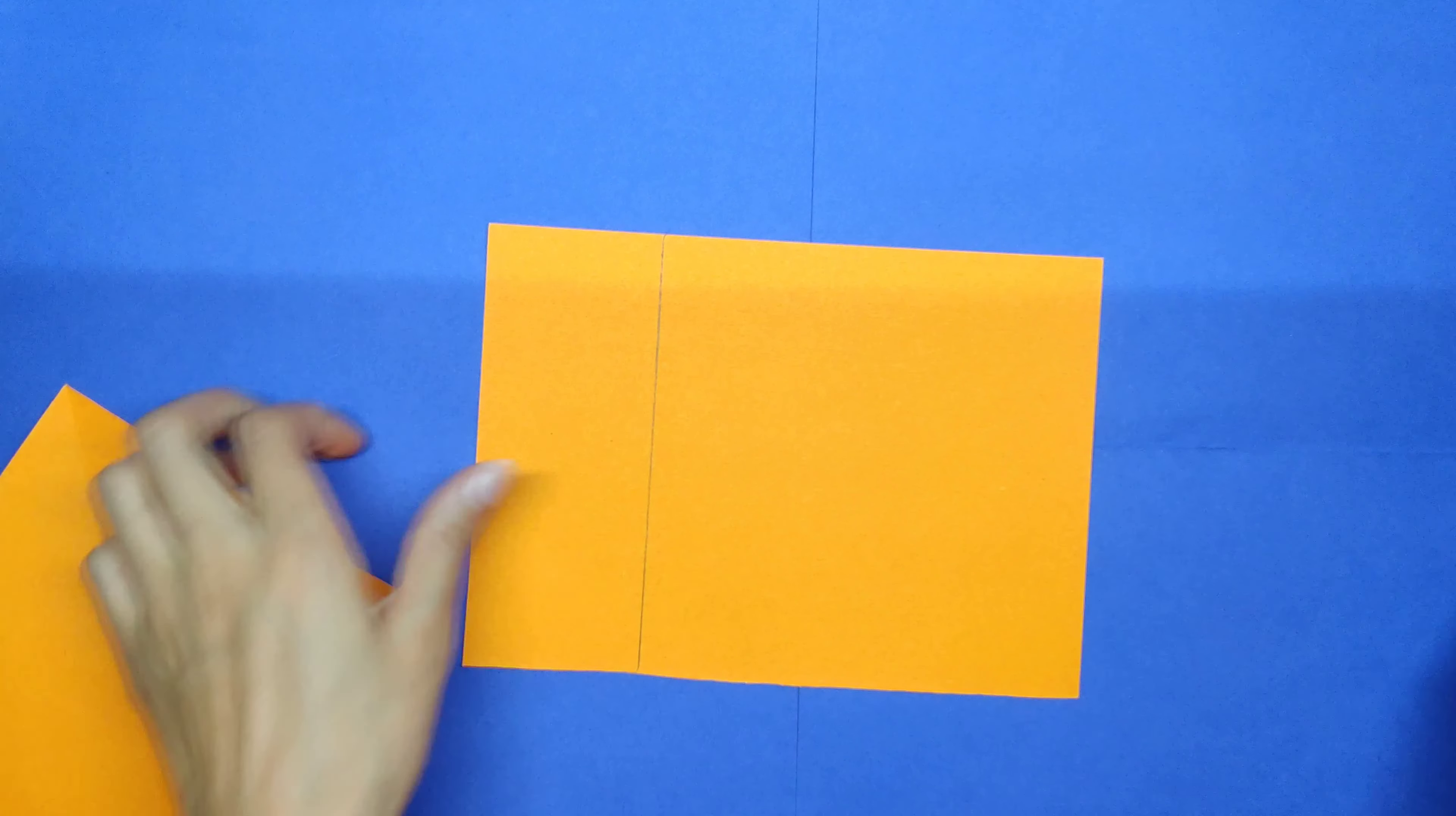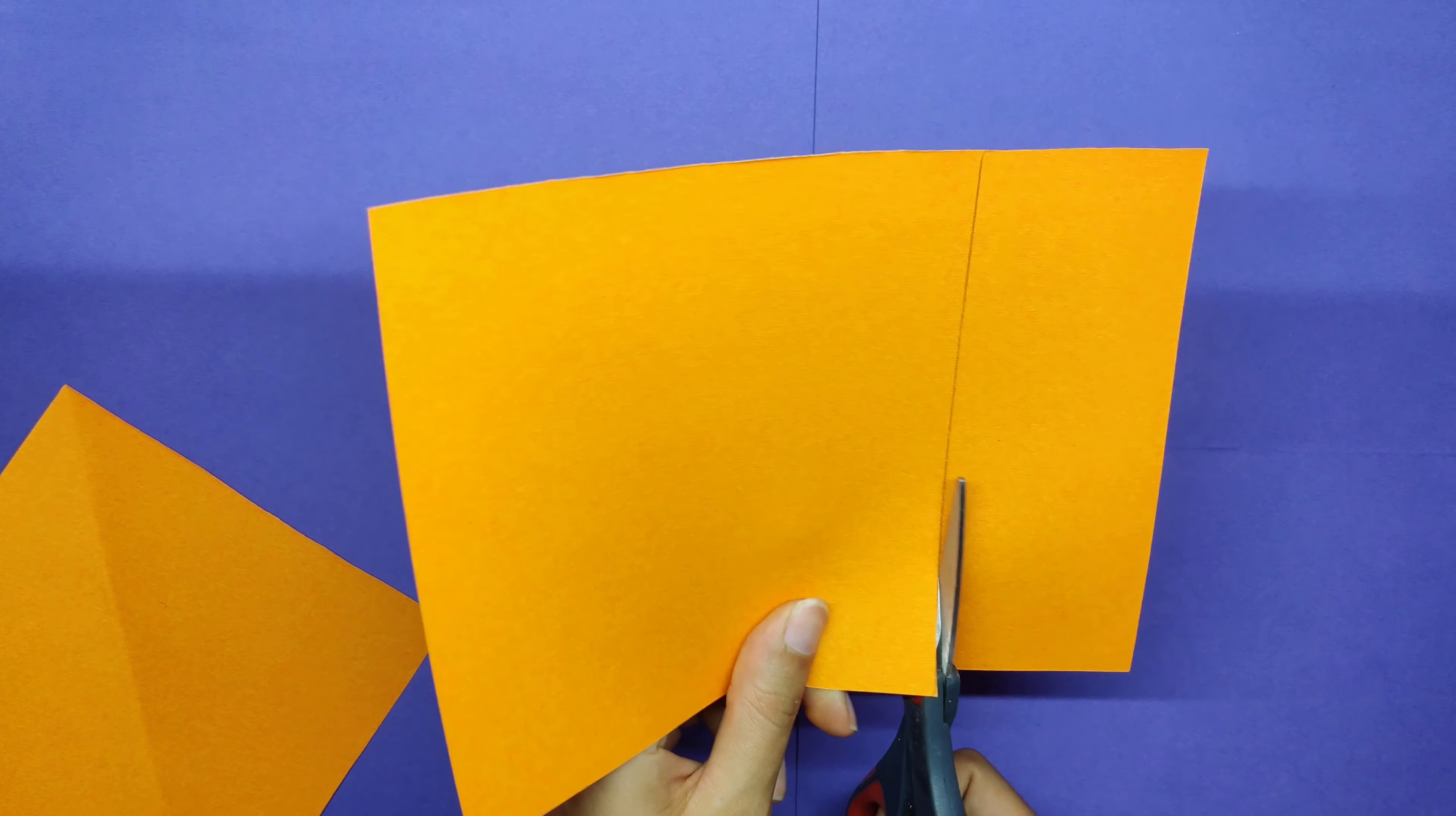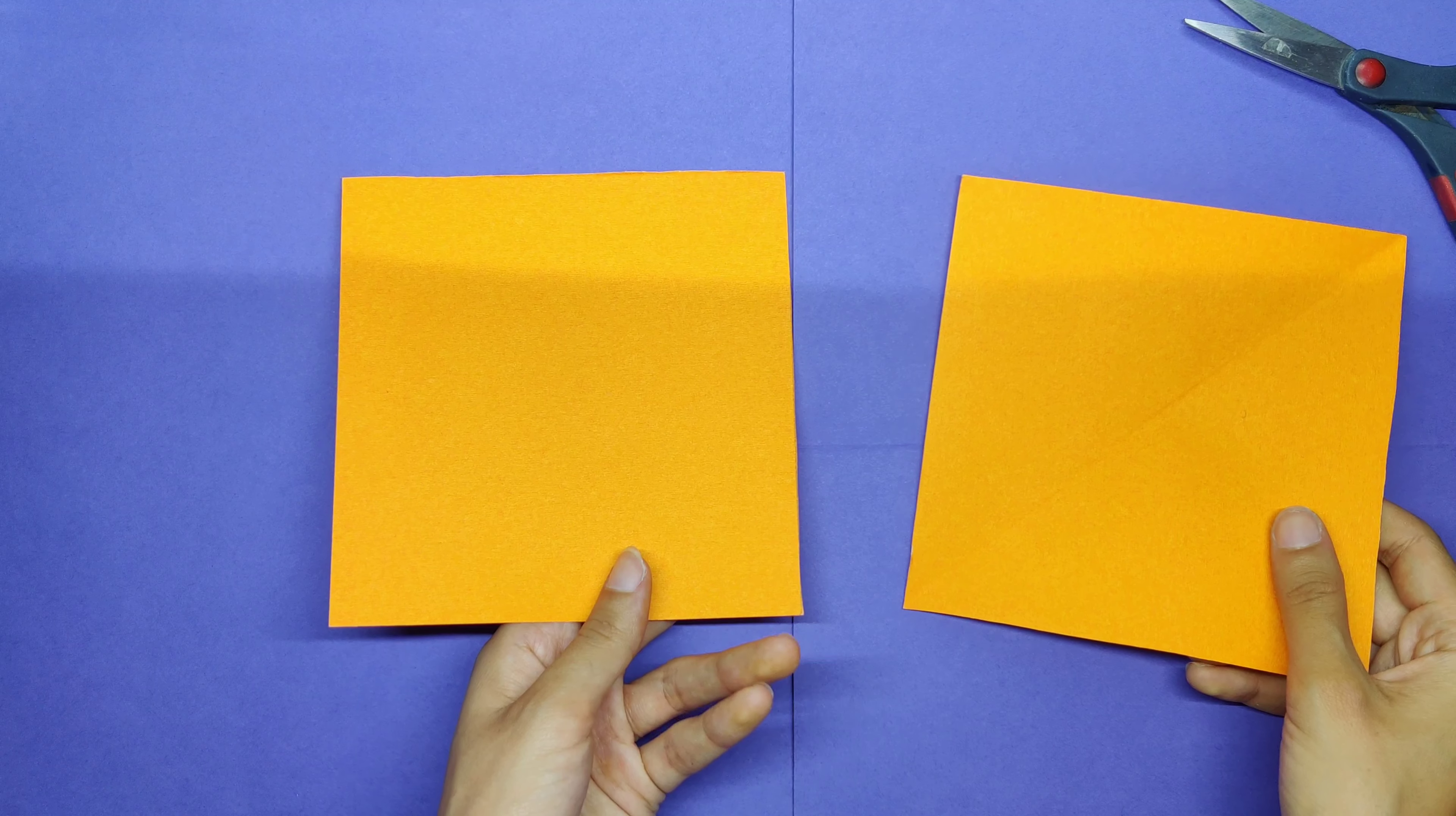Ta-da! Cut it out, same thing. Turn the paper and cut out the rectangle. I'm talking about this rectangle. Now you got two squares.